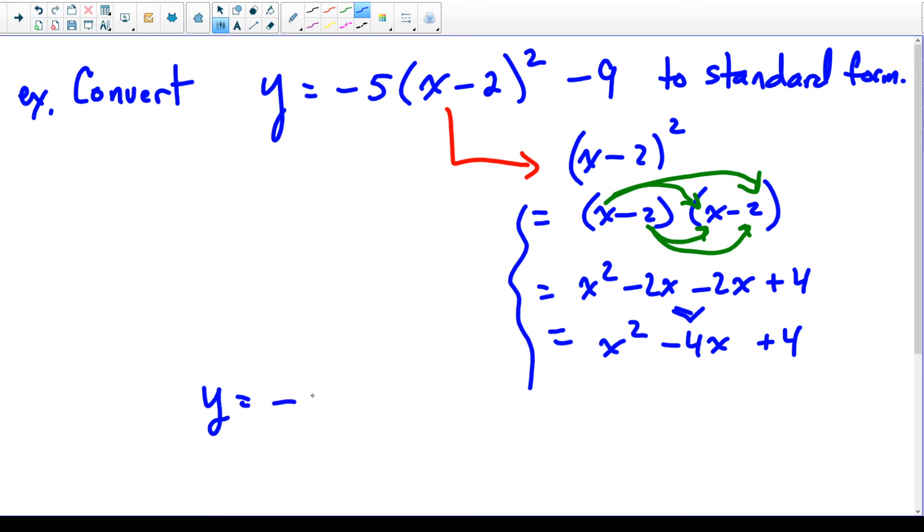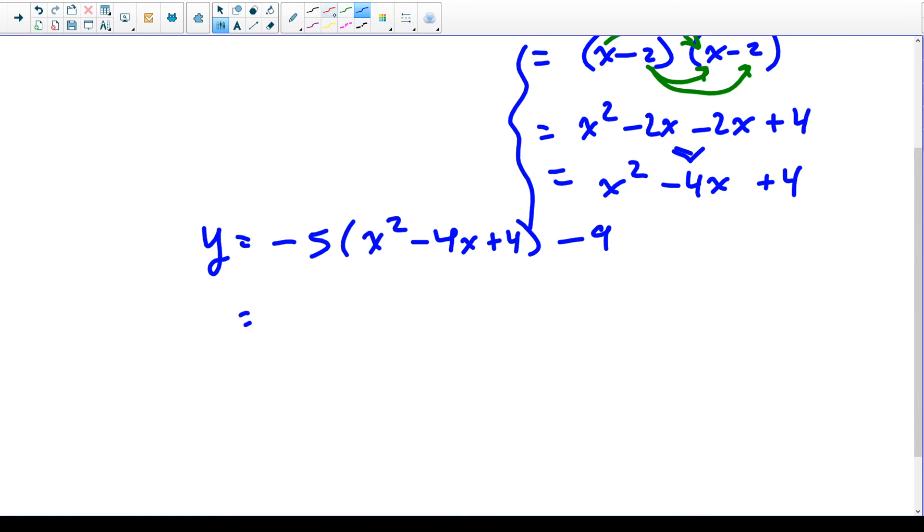So we end up with y equals minus 5 times, open a big bracket, put that trinomial in there, x squared minus 4x plus 4, and then the minus 9 at the end. And now we're going to distribute the minus 5 into the trinomial. So minus 5 times x squared is minus 5x squared, minus 5 times negative 4x is plus 20x, and minus 5 times plus 4 is minus 20, and then we have the minus 9 still there. Now I'm going to combine these two as like terms. So our final answer is negative 5x squared plus 20x minus 29, and that is our standard form.